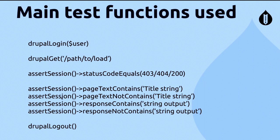The main test functions we're using are drupalLogin, drupalGet to navigate to a page, and assertSession statusCode equals — 403, 404, or 200 — to test access. We can also test by the presence or absence of specific text strings on the page. Note that assertSession functions work by outputting a boolean: if true, the test passes; if false, it fails. So we write tests so that output is always true, then log out again.